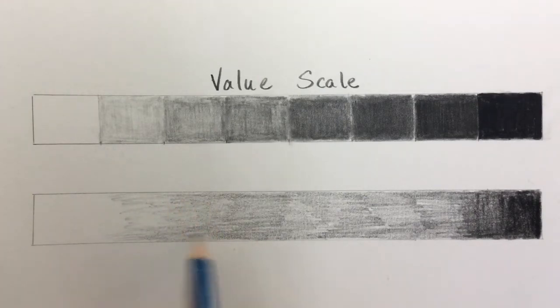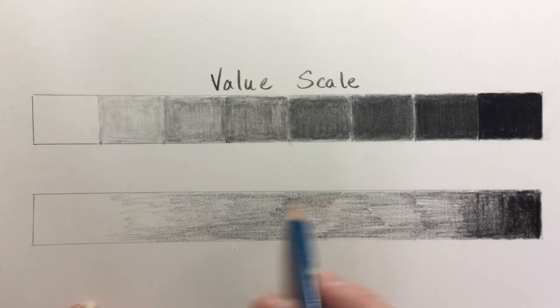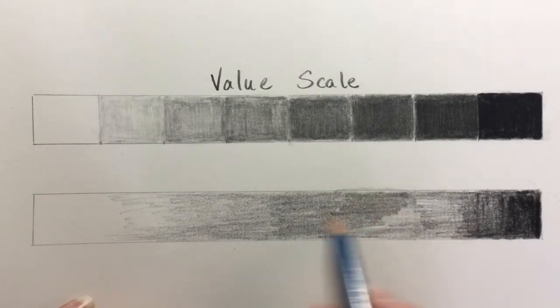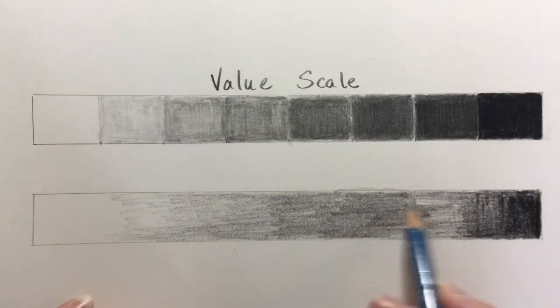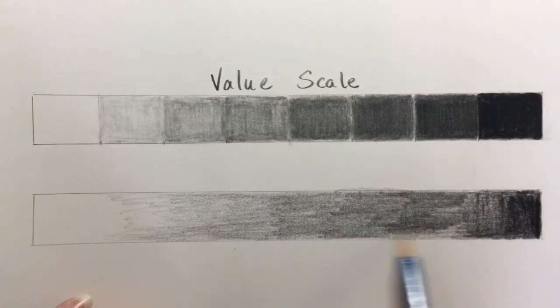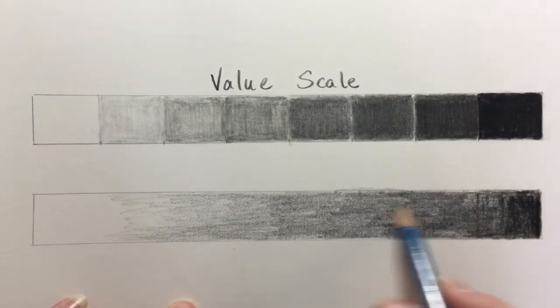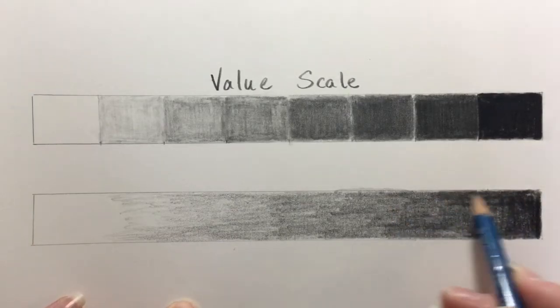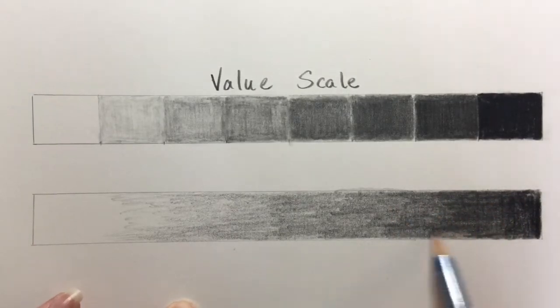The gradation scale should show a very gentle fade. It should not look like separate boxes with individual values. It should look like a very seamless transition from dark to light or from light to dark, depending how you're looking at it.